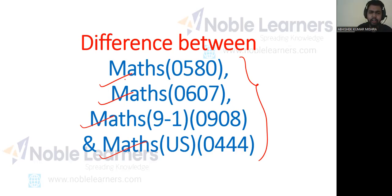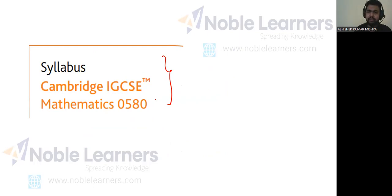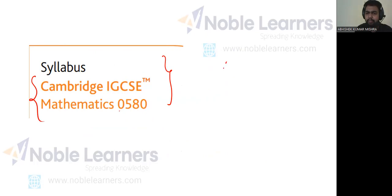First of all, let us talk about Mathematics 0580. This is the most famous course offered by IGCSE. In India, most students are opting for this one — the majority of students are opting for Maths 0580. Maths 0580 is divided into two parts: one is called Core and one is called Extended.